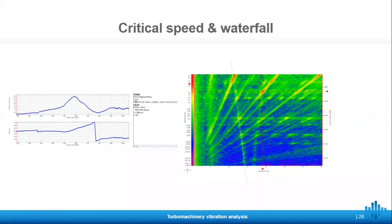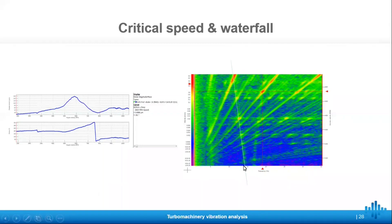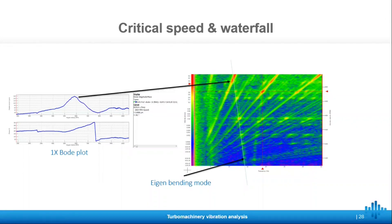Let's take a look at the link between the Bode plot and the waterfall. The Bode plot is a trend of the 1x values — a 2D or scalar graph plotted versus speed. The waterfall collects spectra versus either speed or time, with the vertical axis or color representing the magnitude. With the logarithmic scale, it's easy to see vertical lines which represent a frequency that is always present, or diagonal lines which are the orders. When these two cross, you end up with a resonance. So if we see any resonance in the Bode plot, we will be able to see the corresponding resonance in the waterfall.